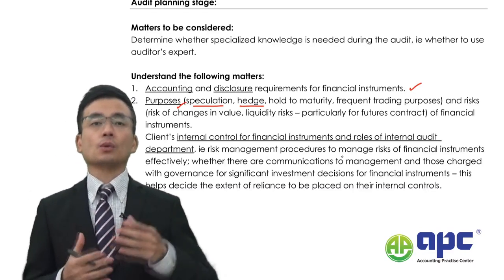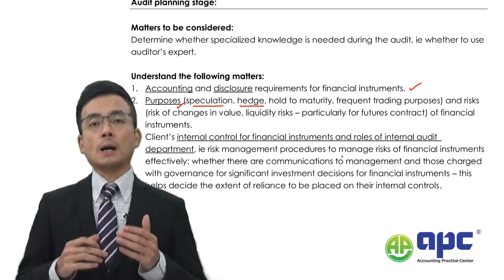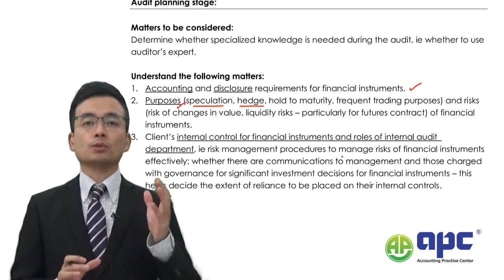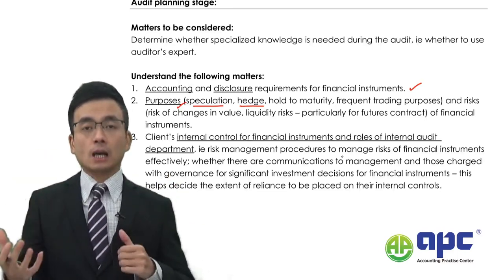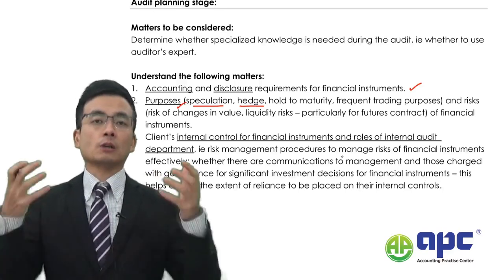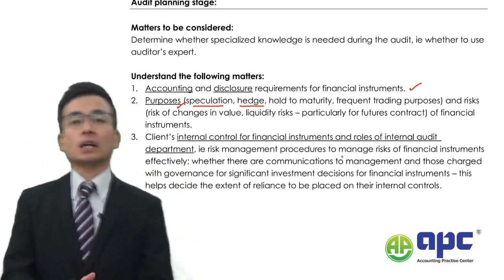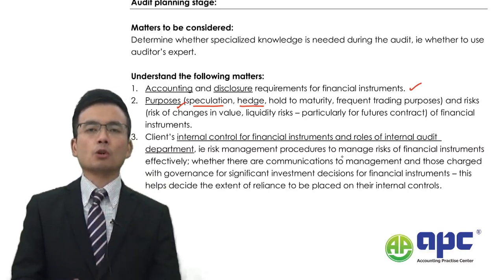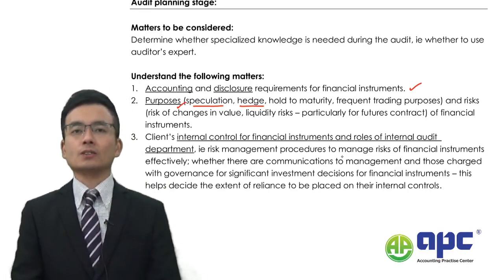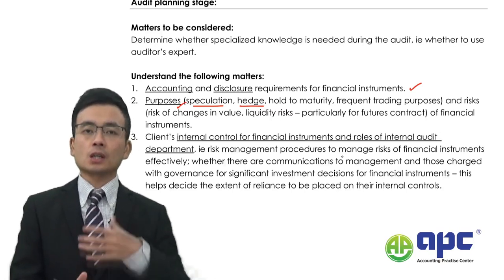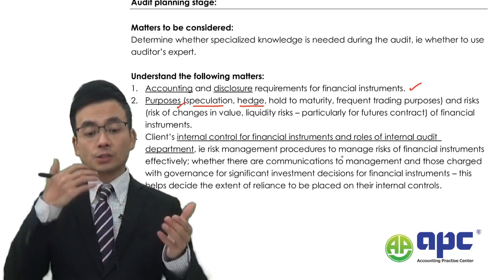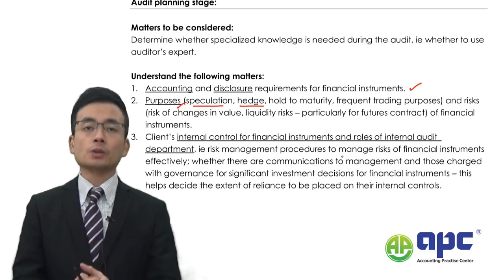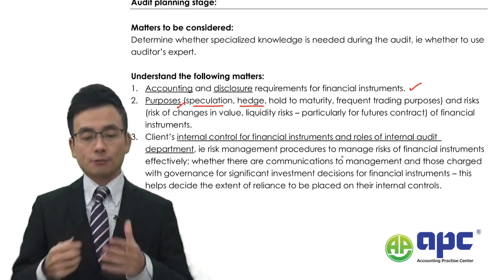For hedge accounting, it depends on whether it is a fair value hedge or cash flow hedge. For a fair value hedge, gains and losses from both sides go directly to P&L to offset each other. For a cash flow hedge, the effective portion accumulates in OCI and the ineffective portion goes to P&L, until the cash market transaction actually takes place. You need to know the purpose of holding the financial instrument — these are the key matters to consider.